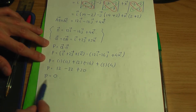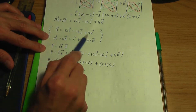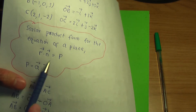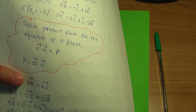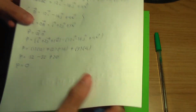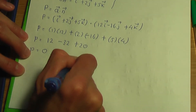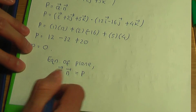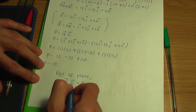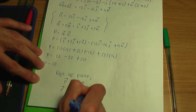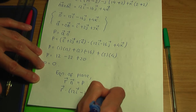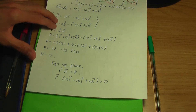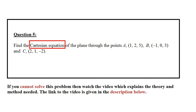With P = 0 and N = 12i − 16j + 4k, the scalar product equation of the plane is r · N = P, which gives r · (12i − 16j + 4k) = 0. We need to convert this to Cartesian form.